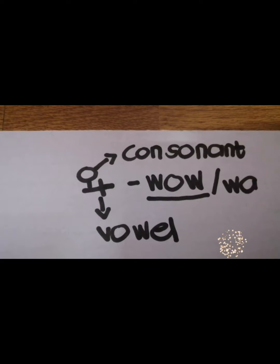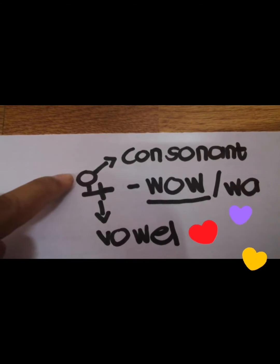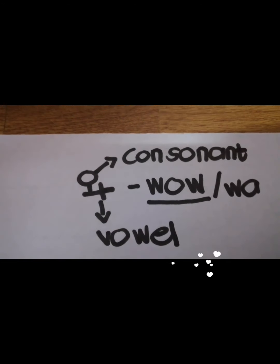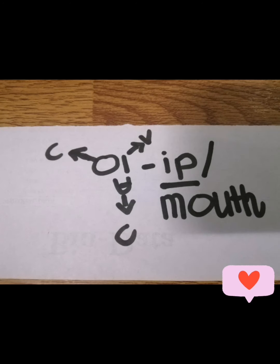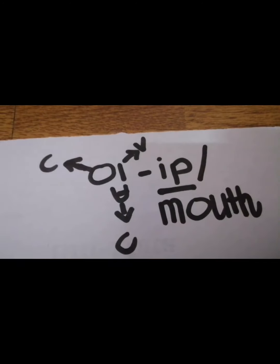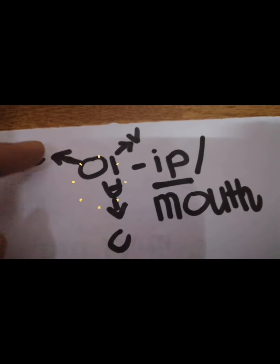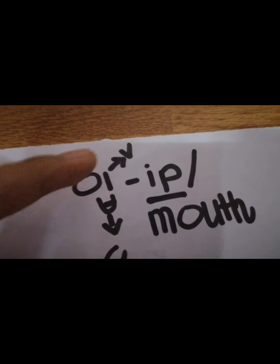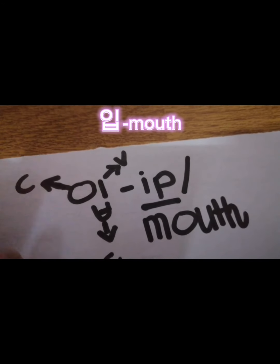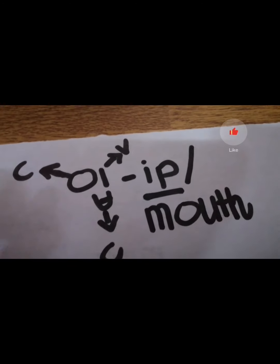Another example is 와, meaning wow in English. The consonant is the NG sound and the vowel follows, so that's 와. Moving on, 입 means mouth in English. The letter NG is silent here, so we have the consonant, letter I, and letter P — that's 입, or mouth.